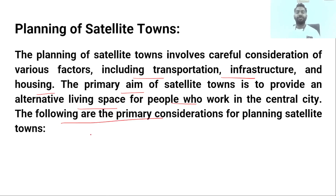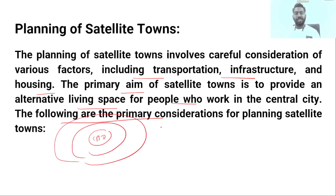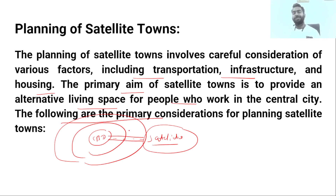For the planning of satellite towns, the most important thing you have to consider is the central business district. Transportation is the most important factor. Then the infrastructure — road conditions, electricity, water, sanitation, etc. After that, it is important to consider which class of people the housing is made for — middle-class or high-class people.